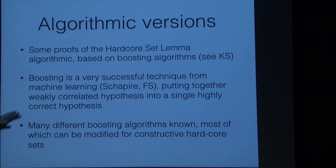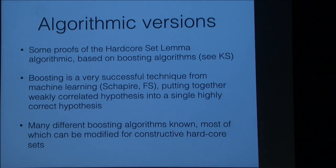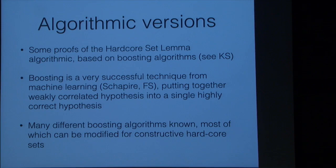This reduction is very simple. If we have an algorithm that proves the hardcore set lemma, then we get an algorithm that proves the dense model theorem — an algorithmic version of the dense model theorem follows from an algorithmic version of the hardcore set lemma. It turns out that the algorithmic version of the hardcore set lemma is really well known: it's just the boosting technique from machine learning, or suitable versions of it. That was actually observed way back in the 90s by Clivens and Savidio.